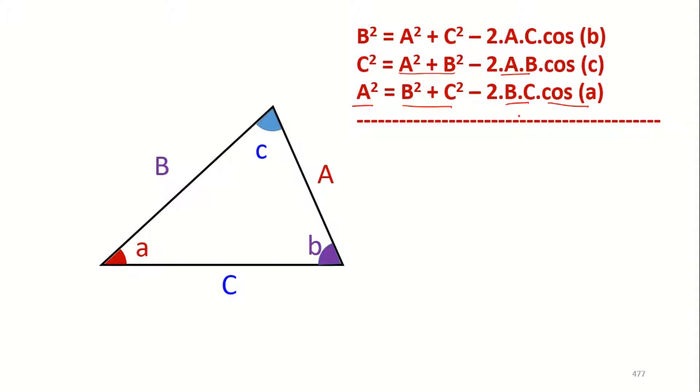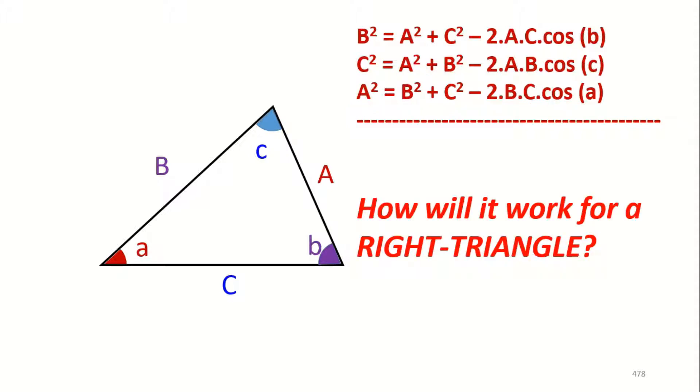Now if you look at it closely, essentially it is Pythagorean but Pythagorean further extends and generalizes. For example, if this triangle were a right angle, if this triangle were right angled, imagine if the right angle were here. Then B would become 90. If I bring this here, then B becomes 90.